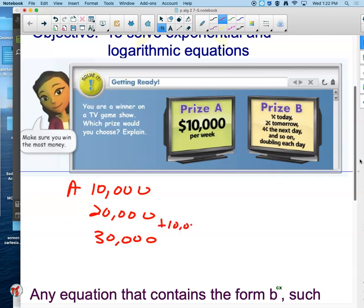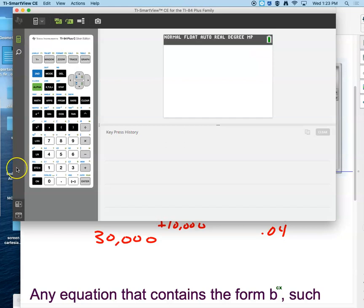And you realize all that's happening here is you're getting $10,000 every week. Prize B doesn't seem like such a big deal. You get a penny today, then you get $0.02 the next day, and $0.04 the next day, and it doubles each and every day. Until we see what's really going on. What I want to do is show you what's going to happen as we take that penny every day and we double it.